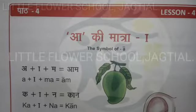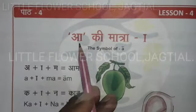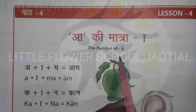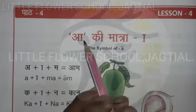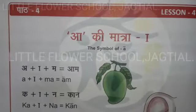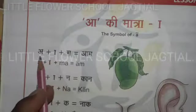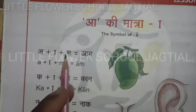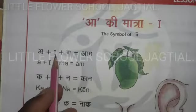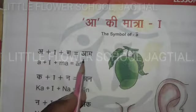Good morning students, today we will see Part 4 - aa ki matra, the symbol of aa ki matra. Now see here what's with aa ki matra: a plus aa matra, a plus ma equals aam; a plus aa matra plus ma equals aam.